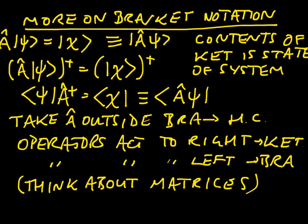So we've looked just a little bit at bra-ket notation. I've introduced the idea of taking an operator inside a ket, simply because we can choose what label we put inside the ket. And we've then thought a little bit about what that means when we take Hermitian conjugates, and what it means to bring an operator inside a bra as opposed to bringing it inside a ket. Thank you very much.